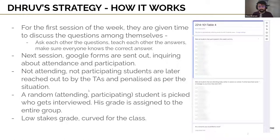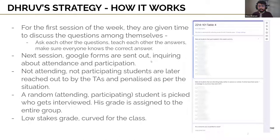What the selected student does in the interview is the grade for the entire group. Students who are not attending or participating are later reached out to by TAs and penalized per their specific situation. The grades are low-stakes, and this activity runs every week. Towards the end, results are adjusted for the entire class — for example, if my lecture wasn't good enough to explain the answers properly, there's some curving involved to make sure my inability doesn't affect students' grades.